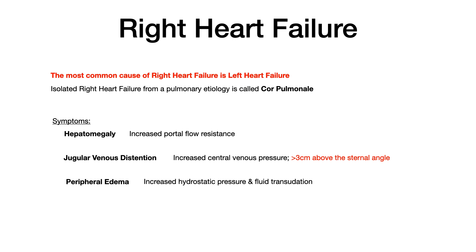If the right side of your heart can't pump blood out, that blood backs up into the inputs to the right side of the heart: the venous system, the systemic circulation, the liver, the spleen, and peripherally. Blood not being pumped on the right side — which receives venous return — will be distributed systemically. So what you will see is hepatosplenomegaly, due to increased portal resistance; jugular venous distension, due to increased central venous pressure — which has to be greater than three centimeters above the sternal angle; and peripheral edema, due to increased hydrostatic pressure and fluid transudation peripherally.